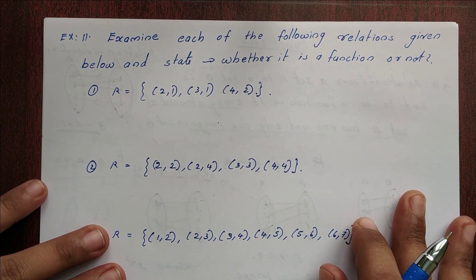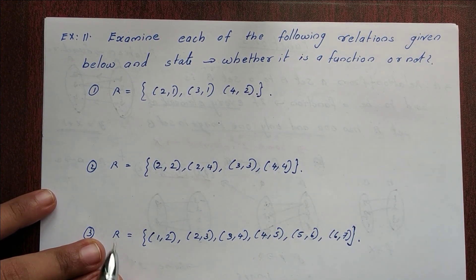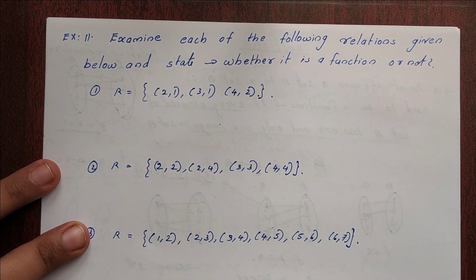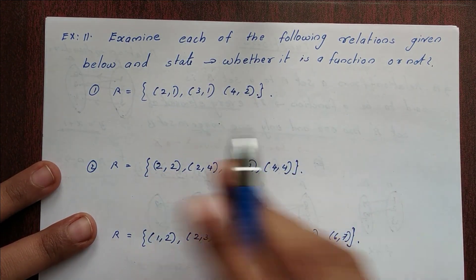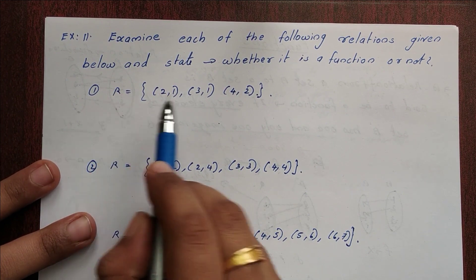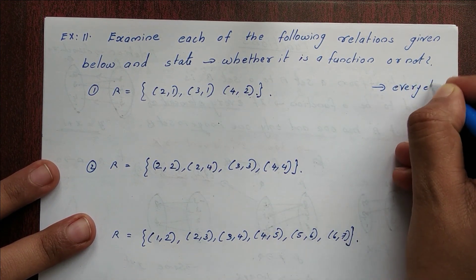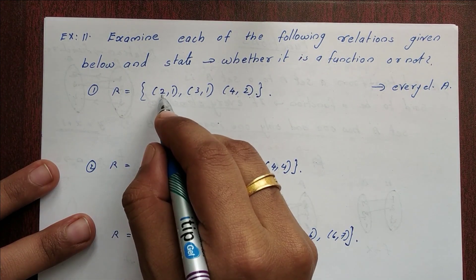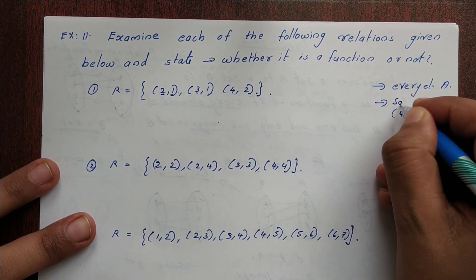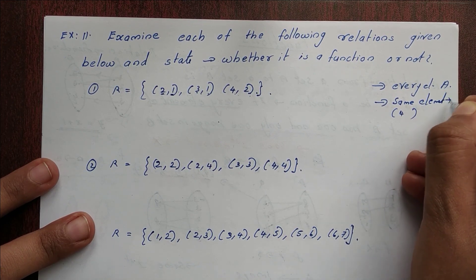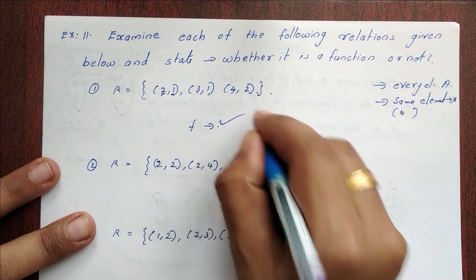Next, Example 11: Examine each of the following relations and state whether it is a function or not. First relation: R = {(2,1), (3,1), (4,2)}. Every element in set A has one and only one image — 2 maps to 1, 3 maps to 1, 4 maps to 2. The first elements are not the same, so this is a function.